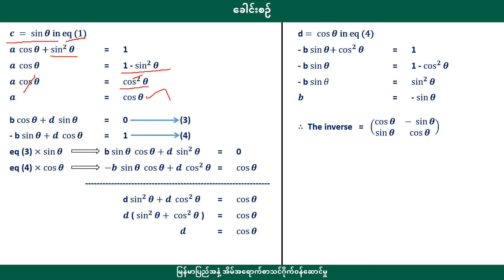cos squared plus cos squared equals 0, equation 3. Minus B sin theta plus D cos theta equals 1, equation 4.